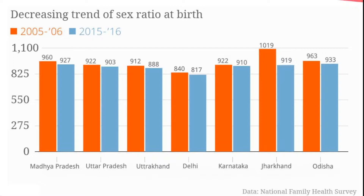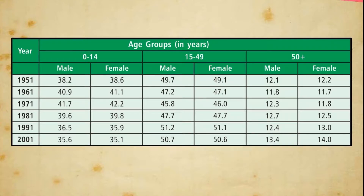Age structure: the age-wise distribution of population helps the government in planning for the people on various aspects. The population is divided into three age groups: (a) 0 to 14 years, (b) 15 to 64 years, and (c) 65 years and above. The share of the working age group — 15 to 64 years — is always greater than the other age groups in high and middle income countries. In low and middle income countries, young people are a major section of the population.